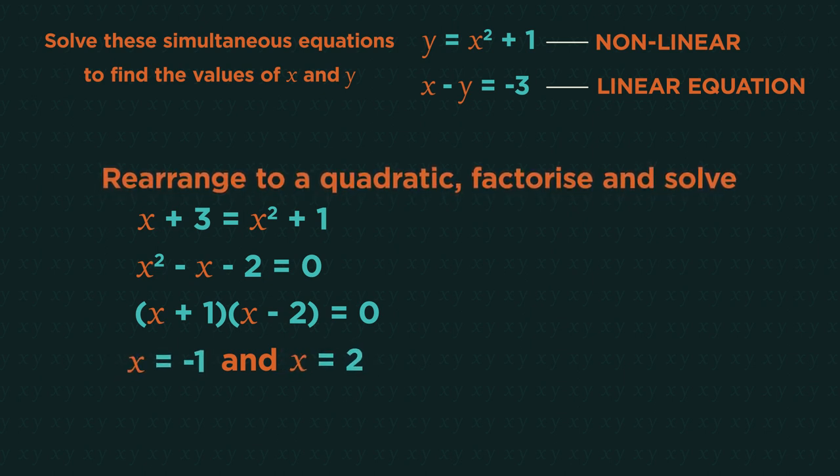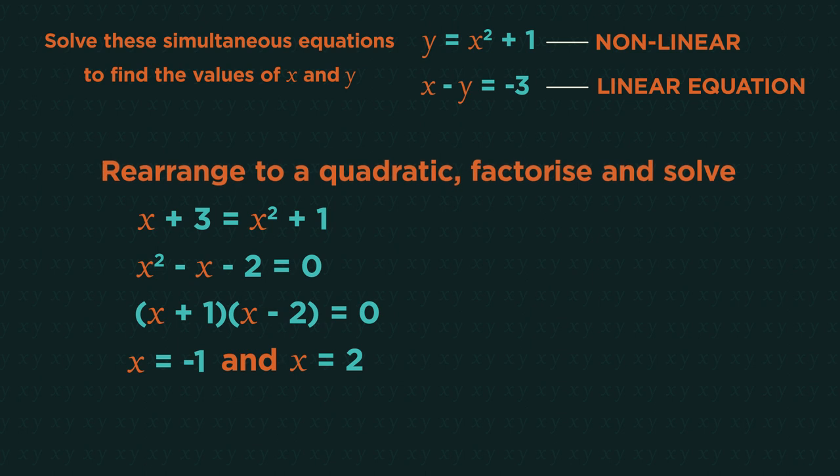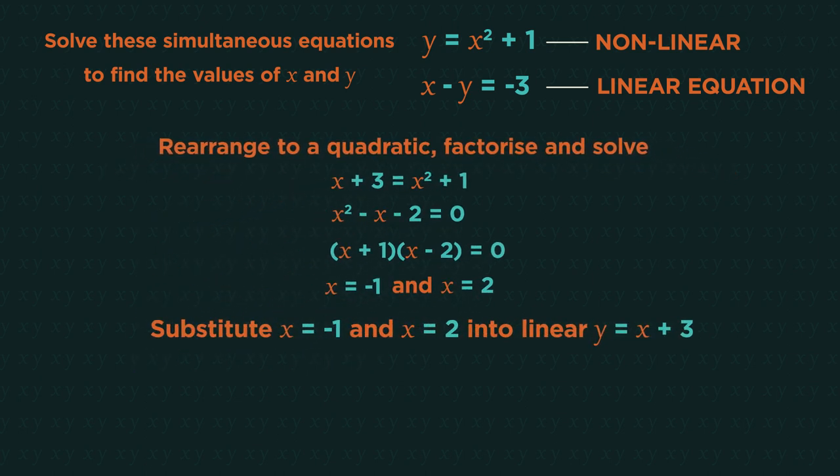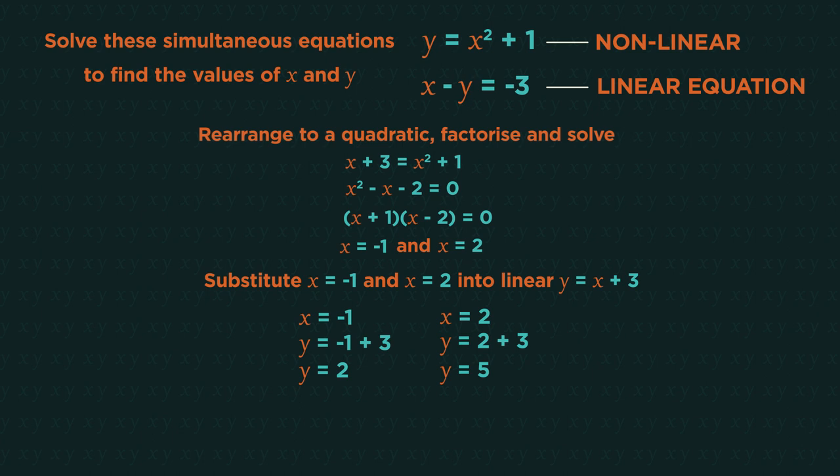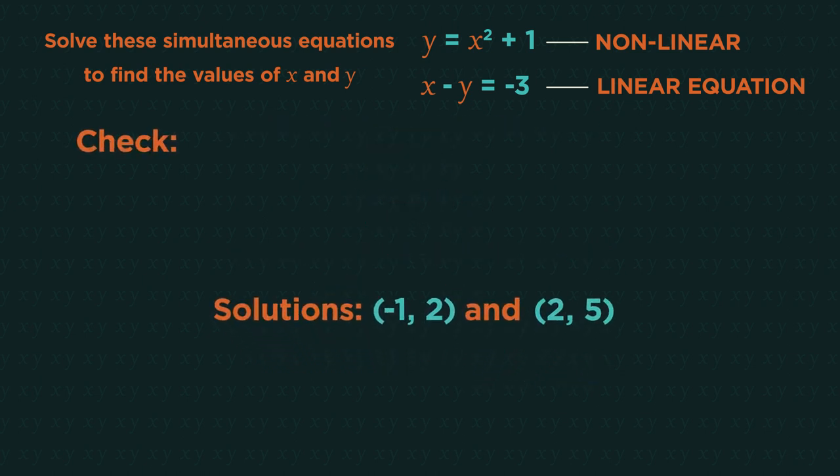Because we have two x values we need two y values. Substitute the x values into the linear y equals equation. So when x is negative one, y is two, and when x is two, y is five. So the solutions are negative one two and two five.